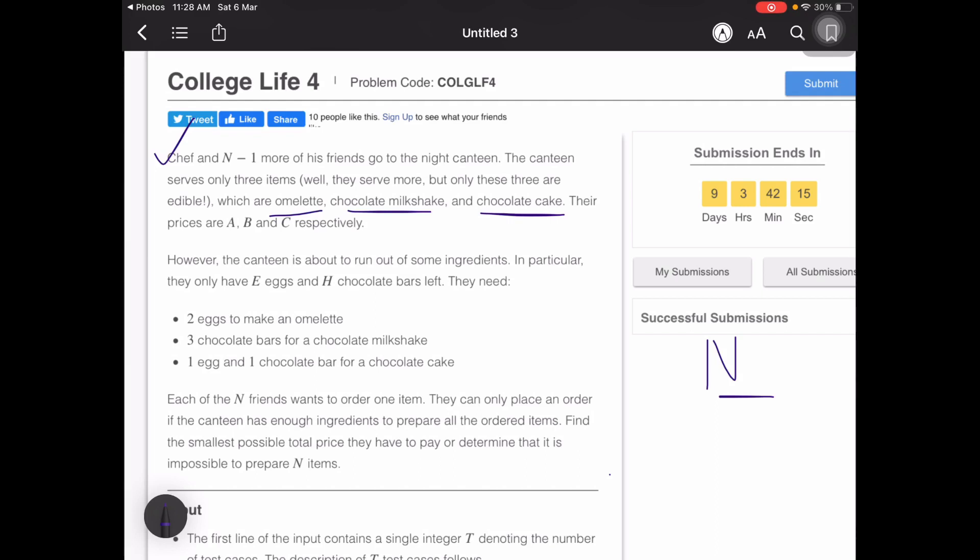These are the three items that all of these n friends can order from, and the respective prices are A, B, and C. However, the canteen is about to run out of some ingredients, so they are left with only E eggs and H chocolate bars.